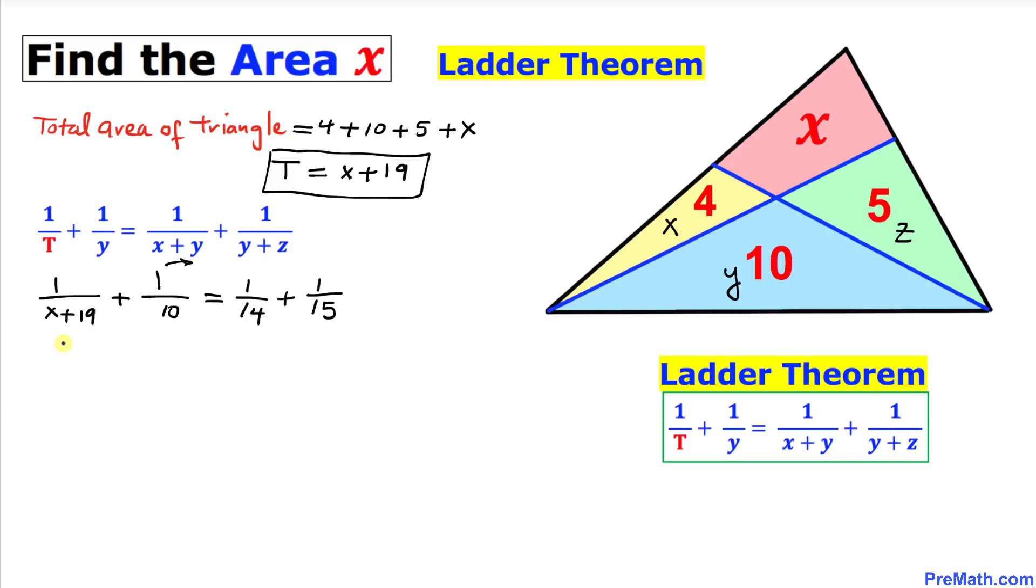So let me go ahead and move this fraction one-tenth on the other side, so I'm going to write down one over x plus 19 equals one over 14 plus one over 15 minus one over 10.